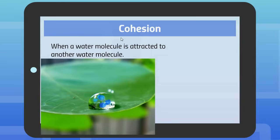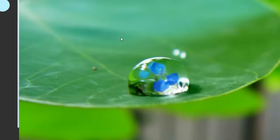Cohesion is when water is attracted to itself or one water molecule is attracted to another water molecule. And so water sticks together. So this little water droplet here is tons and tons of little tiny water molecules in there.